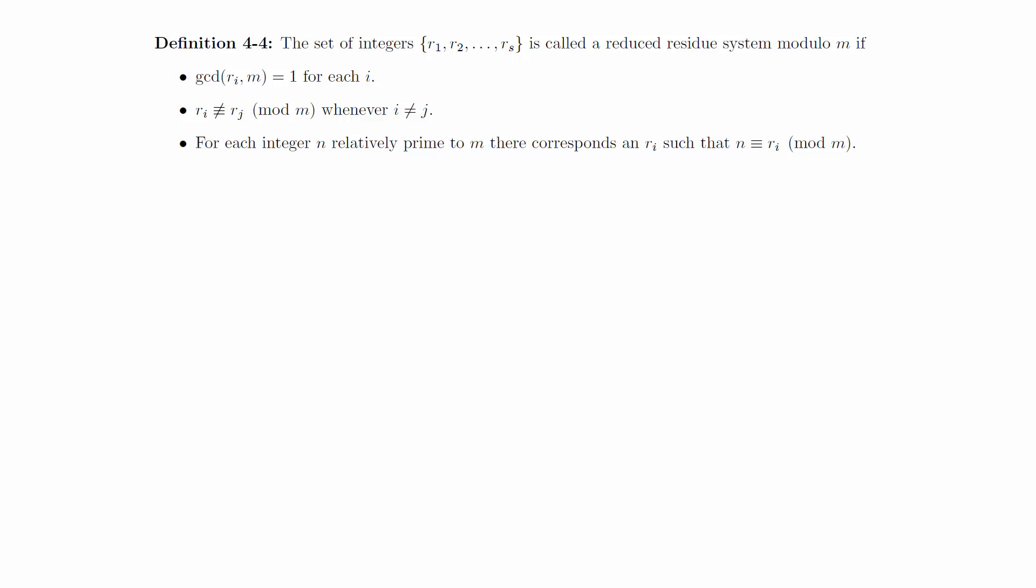Definition. The set of integers r1, r2 up to rs is called a reduced residue system modulo m if the GCD of r sub i and m is 1 for each i, r sub i is not equivalent to r sub j modulo m whenever i is not equal to j, and for every integer n relatively prime to m there corresponds an r sub i such that n is equivalent to r sub i mod m.